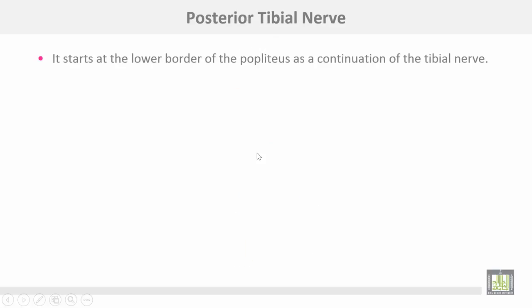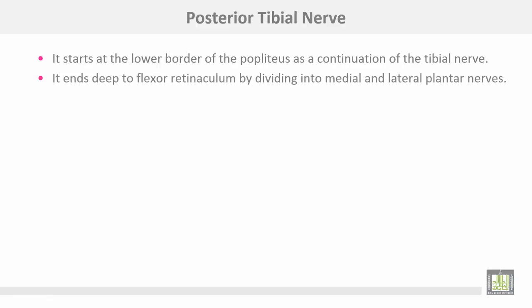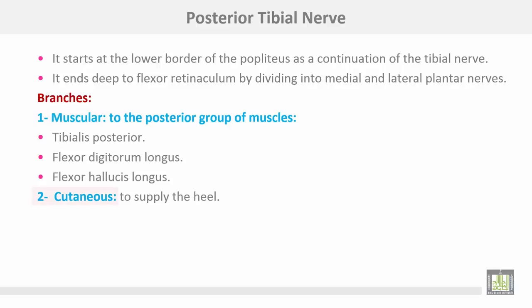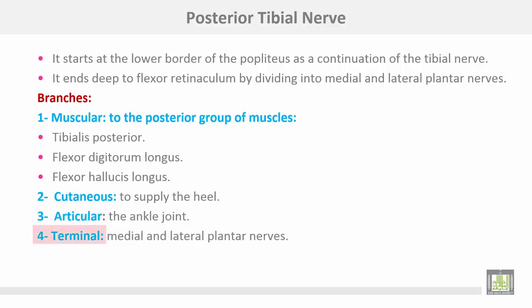The posterior tibial nerve starts at the lower border of the popliteus muscle as a continuation of the tibial nerve. It ends deep to the flexor retinaculum by dividing into medial and lateral plantar nerves. Branches include: muscular branches to the posterior group of muscles of the back of the leg — tibialis posterior, flexor digitorum longus, and flexor hallucis longus; cutaneous branches to supply the heel; articular branches to the ankle joint; and terminal branches — medial and lateral plantar nerves.